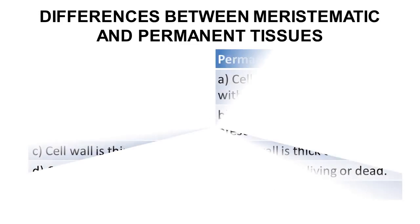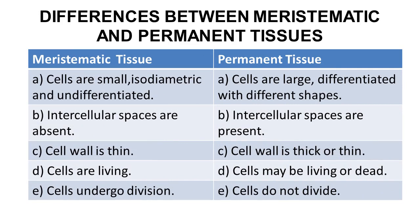Summarizing the differences: meristematic cells are small and undifferentiated; permanent cells are large and differentiated with different shapes. In meristematic tissue there are no intercellular spaces; in permanent tissue intercellular spaces are present. The cell wall is thin in meristematic tissue but thick or thin in permanent tissue. Meristematic cells are living; permanent cells may be living or dead. Meristematic cells undergo division; permanent cells do not divide.